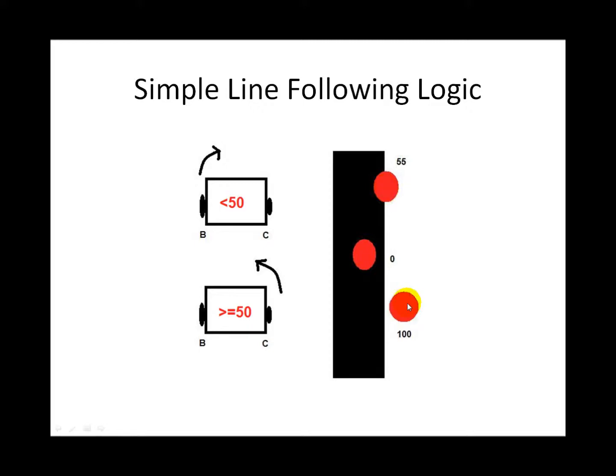These red circles represent the light sensor shining its little red light down on a mat. This one over white has a value close to 100. This one shining over a dark line has a value close to zero. This one being halfway over the dark line and about halfway over the white is going to give you a number about halfway in the middle.